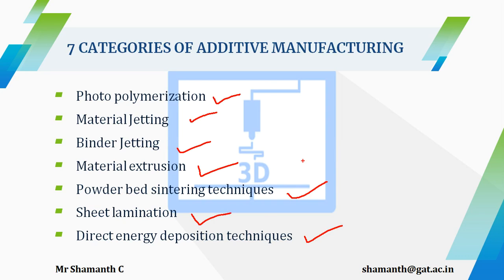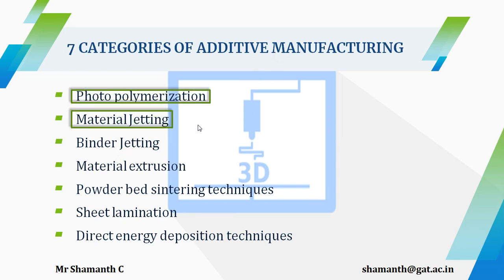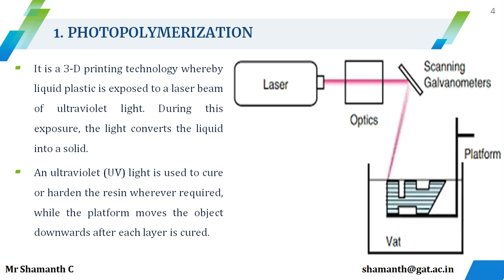There are different methods under these categories, but we are only taking the main method of manufacturing. There might be different variations in the material jetting process, but we are only dealing with the main category. In today's lecture we will be seeing what is a photopolymerization process and then what is a material jetting process. The first method in additive manufacturing is called the photopolymerization process, which was the first type of 3D printing method actually introduced into the market.